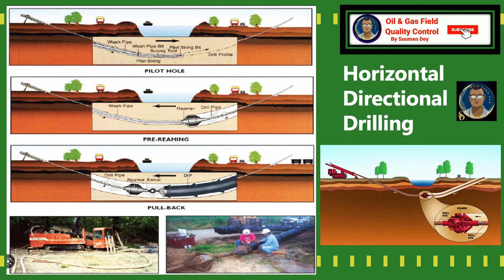What type of pipe can be used in HDD? Choosing pipe material for the HDD method — a pipe can be made of materials like polyethylene, polypropylene, ductile iron, steel, and PVC — essentially anything capable of being pulled through the drill path.